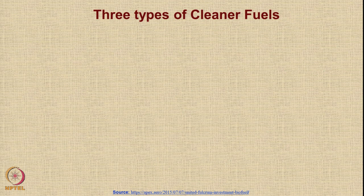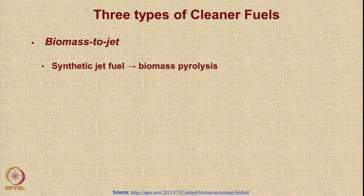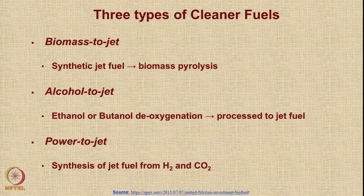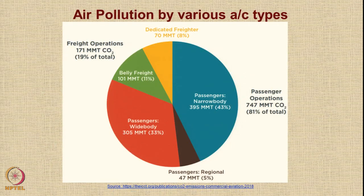There are 3 types of artificial or cleaner fuels. One is biomass-to-jet fuel, where synthetic jet fuel is created by biomass pyrolysis. There is also alcohol-to-jet, in which ethanol or butanol deoxygenation is carried out to create jet fuel. And there is a third called power-to-jet, in which hydrogen and carbon dioxide are synthesized together to create jet fuel directly.